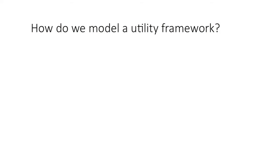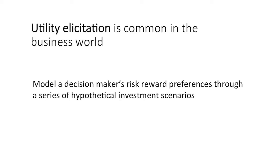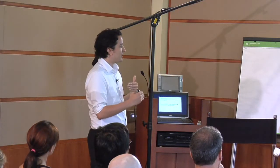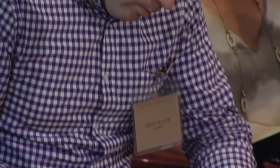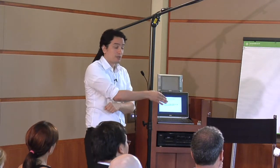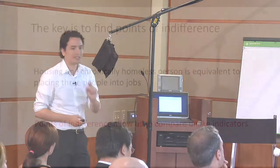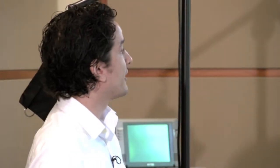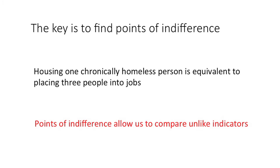How do we model a utility framework? There's some precedent for this. Utility elicitation is fairly common in the business world, focused on higher-level executives. The basic process is modeling a decision maker's risk-reward preference through a series of hypothetical investment scenarios — trying to find points of indifference. In a social sector example, we may find that for an individual organization, housing one chronically homeless person is equivalent to placing three job-ready people into jobs. These points of indifference allow us to compare unlike indicators.